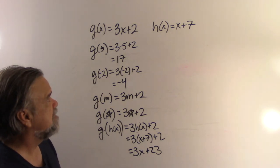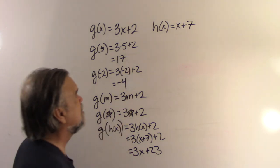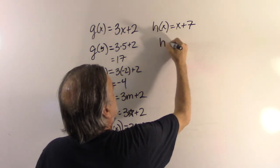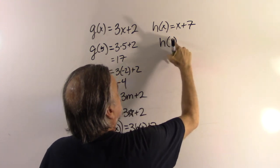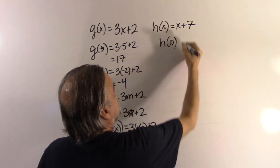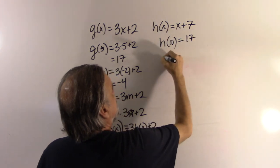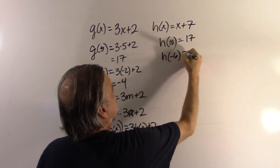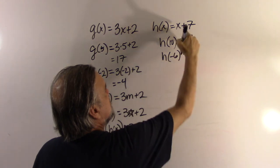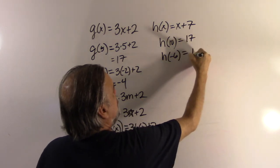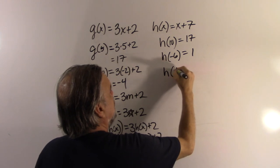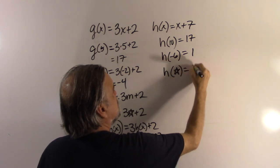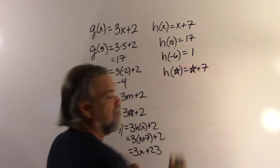So, now let's see. Let's look at my h's. h(x), well, I already have that. Let's say h(10) is going to be 10 plus 7. That'll be 17. Let's say h(-6), that'll be -6 plus 7, which will be 1. And if we have h(star), that'll be star plus 7.